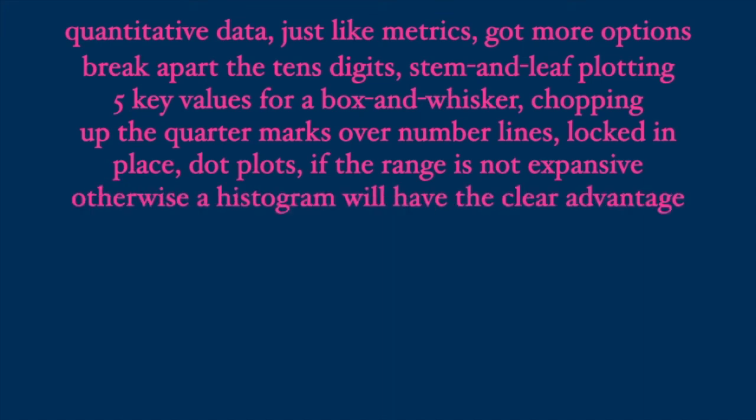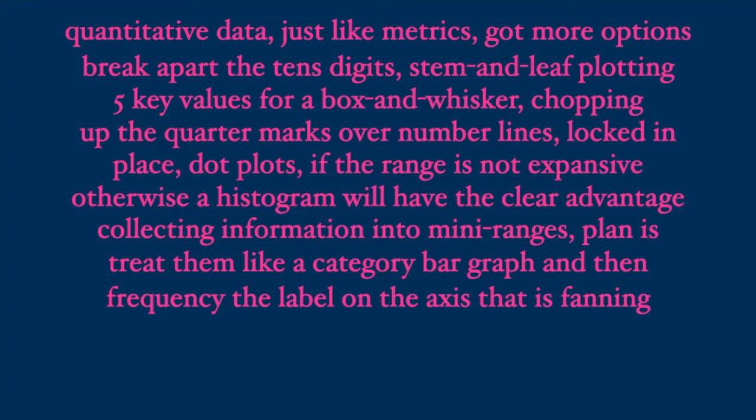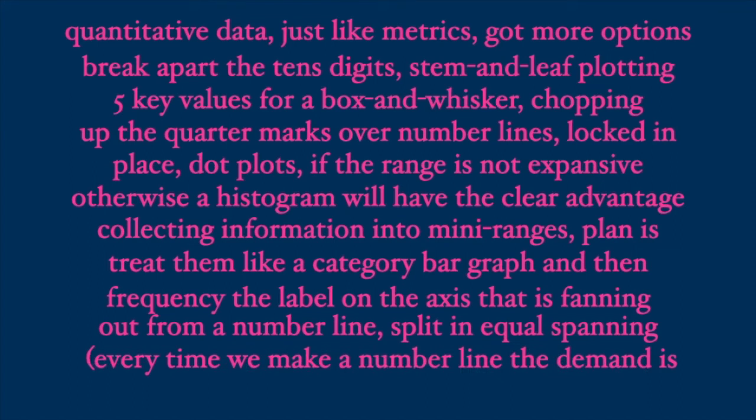Otherwise a histogram will have the clear advantage. Collected information in the mini ranges plan is treat them like a category bar graph and then frequency the label on the axis that is fanning out from a number line splitting equals spanning. Every time we make a number line the demand is that we have a constant cap, no kind of random.